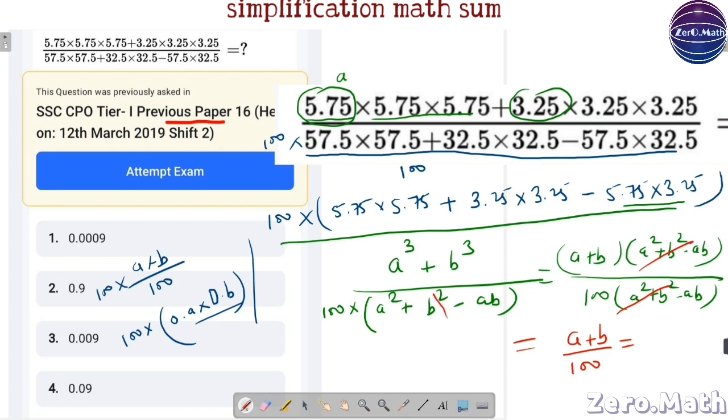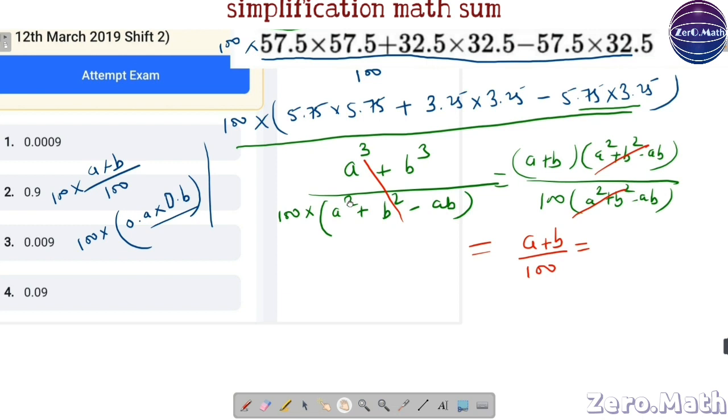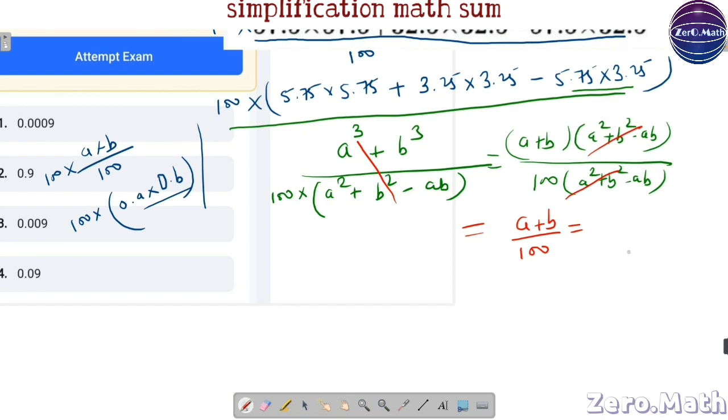Now, what's the value of a and b? a is 5.75 whereas b is 3.25. So let's write it down. 5.75 plus 3.25, let's divide it by 100.